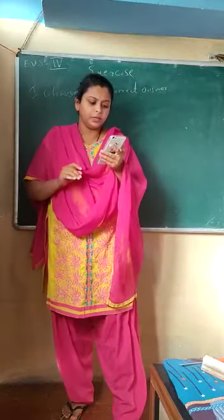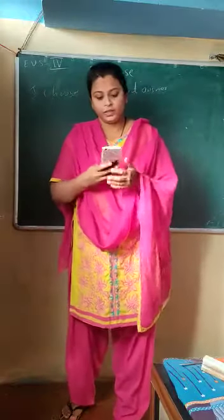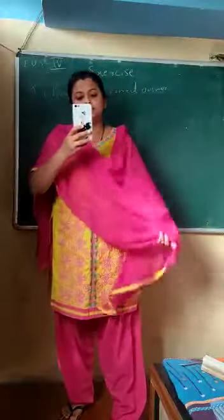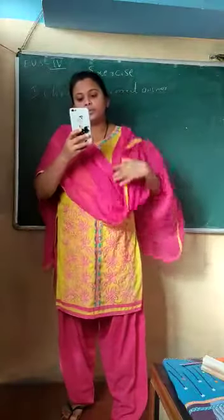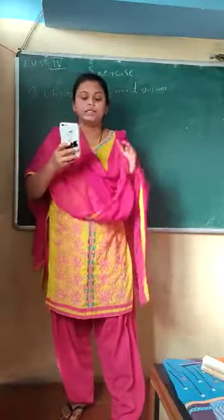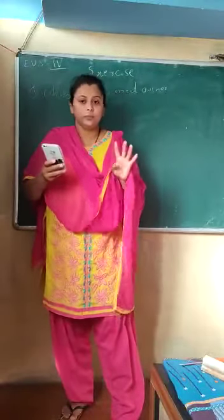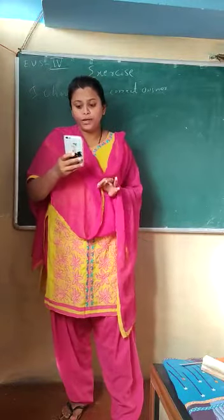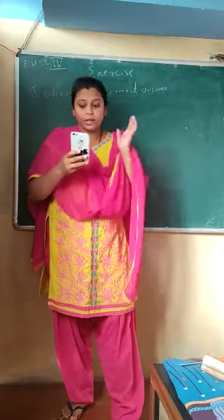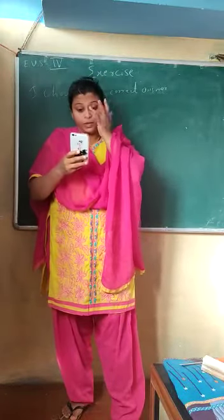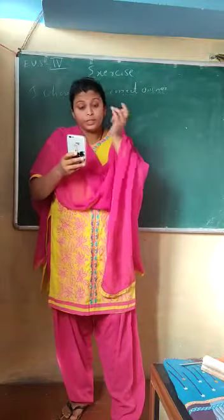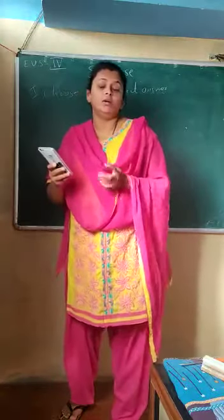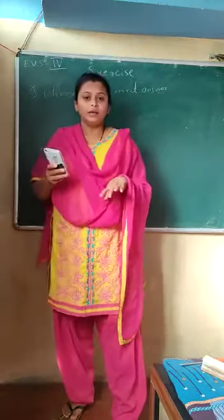The first sentence is: the joints that join the bones of the skull are — movable, immovable, hinge joint, or pivot joint. Which is the correct answer? As we know, in the skull all the bones are immovable, so the answer is immovable joints.